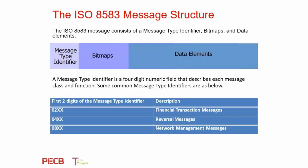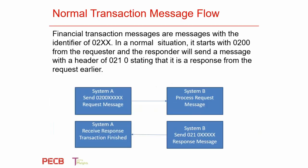This is one slide you really want to take in when building your own applications that will consume data and do transaction processing. There are three areas: the message type identifier, the bitmaps, and the data elements. The first two digits of the message type identifier indicate: financial transaction messages are 02, reversal messages are 04, and network management messages have their own designation. It's important for organizations to stick with the standard.